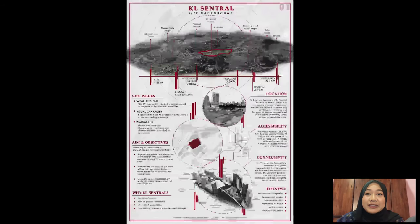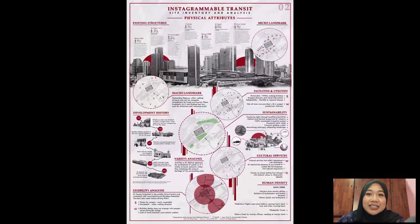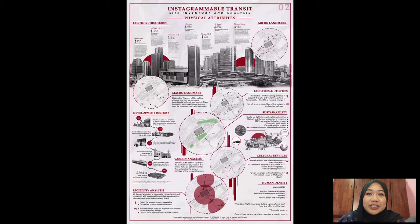Now that we have seen the site background and its issues, let us turn to site inventory and analysis. I've divided the site inventory analysis into eight elements which are the existing structure, land use, visual and senses, circulation, climate, vegetation and hydrology.